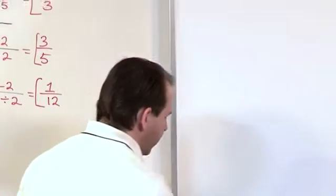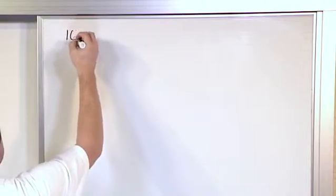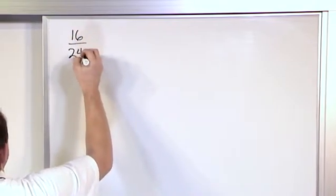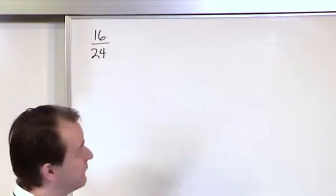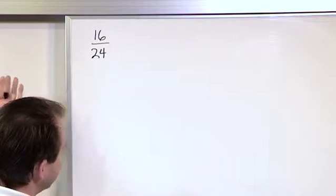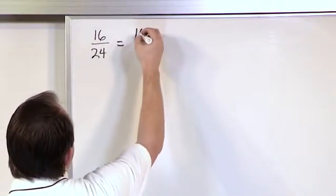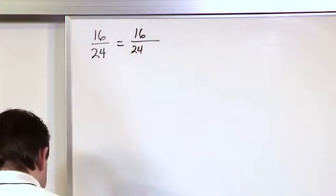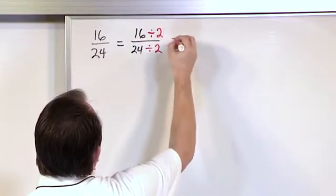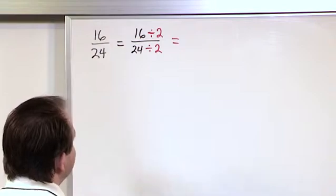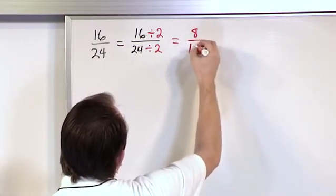Let me go on to the clean board over here and we'll just work a couple additional just to make sure you understand. What if I have 16/24? Is this simplified or not? It's not simplified because I can tell right away I can divide the top and bottom by at least the number 2 and make it simpler. So let's try to do that. 16/24. Let's divide the top and the bottom by 2 like this. And what am I going to get? 16 divided by 2 is going to give me 8. 24 divided by 2 is going to give me 12.